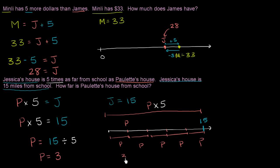And you can see that: three plus three plus three plus three plus three — three times five is 15. Jessica's house, which is 15 miles from school, is five times as far from school as Paulette's house, which is three miles from school. So it all makes sense.